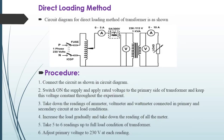The direct loading method to determine voltage regulation and efficiency of the transformer. This circuit diagram shows the connection for the direct loading method. In that, a single phase supply is provided to the auto transformer. Then ammeter, wattmeter, and voltmeter are connected to the primary side. The secondary side is connected to the load with ammeter and voltmeter. This two-winding transformer is a step-down transformer, meaning 230 volts is stepped down to 115 volts.